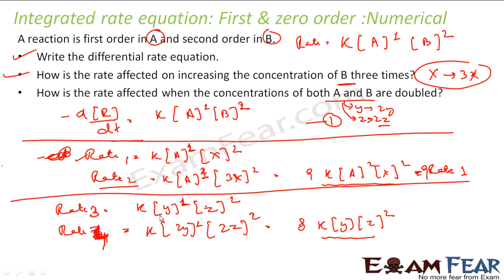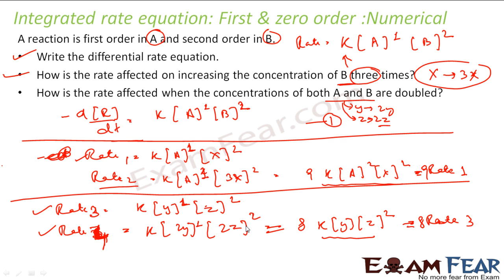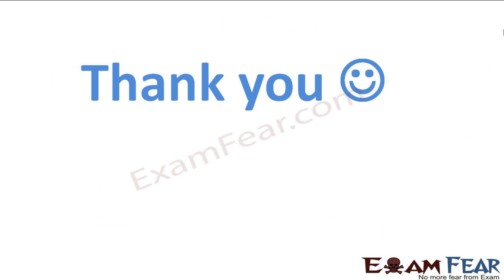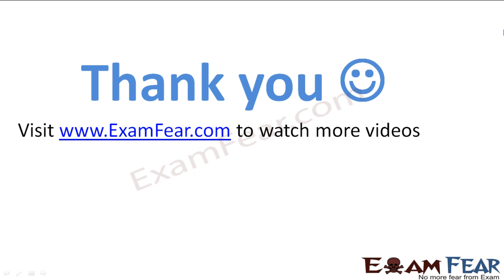It's pretty easy — you just assume the initial concentration of the reactant to be x, and the final concentration to be 3x, 4x, or 5x depending on the question, then find the rate in both cases and compare them. This tells you whether the rate has become 8, 6, or 7 times. Thank you — visit examphia.com to watch more videos.